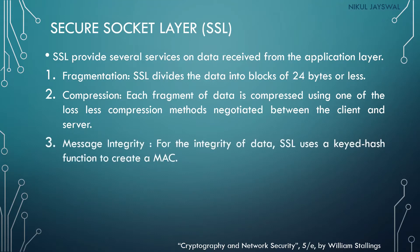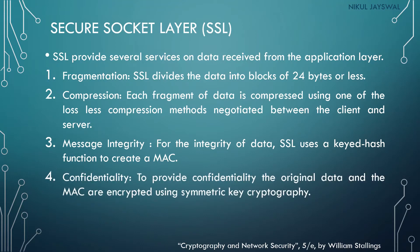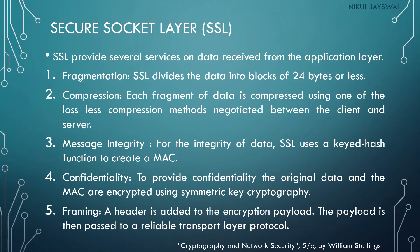Third, SSL provides message integrity — unauthorized modification will not be done. SSL uses a keyed hash function to create a MAC, which stands for Message Authentication Code. Fourth, for confidentiality, the original data and the MAC are encrypted using symmetric key cryptography. Fifth, framing: a header is added to the encrypted payload, and the payload is then passed through the reliable transport layer protocol. All information related to encryption is stored in that framing.